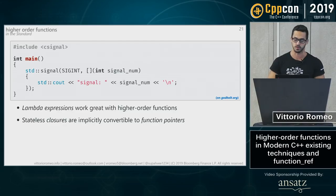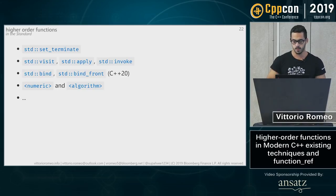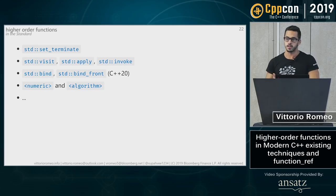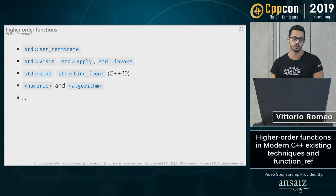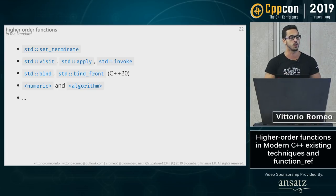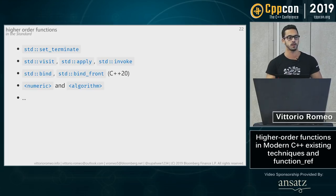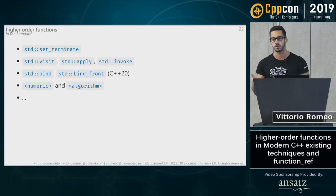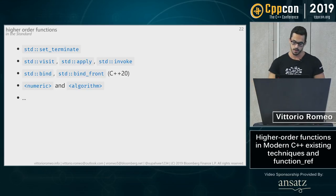C++ has many more higher-order functions: set_terminate, std::visit, std::apply, std::invoke, std::bind (which should be replaced by lambdas), and std::bind_front introduced in C++20. Pretty much everything inside the numerical/algorithm header is a higher-order function — find_if, accumulate, count_if, and many more.